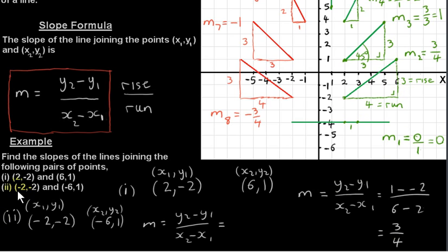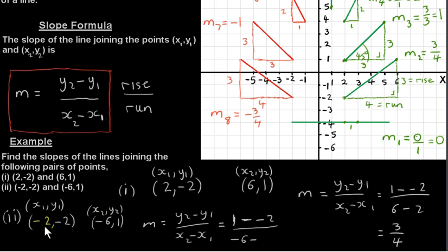Now let's look at part two. I've labeled the first point (-2, -2) as X1, Y1, and the second point as X2, Y2. We plug the values into the formula. Y2 is one, minus Y1 which is minus two, over X2 which is minus six, minus X1 which is minus two. One minus minus two is one plus two, which is three. Minus six minus minus two is minus six plus two, which is minus four. So we have plus three divided by minus four — plus divided by minus is minus — so we get minus three quarters.